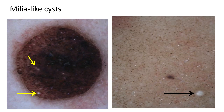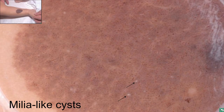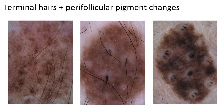What about milia-like cysts? Milia-like cysts are seen most frequently in seborrheic keratosis, but they can be seen in nevi. When you do see them in nevi, it does suggest a congenital origin. Another example shows a congenital nevus with a few milia-like cysts present.